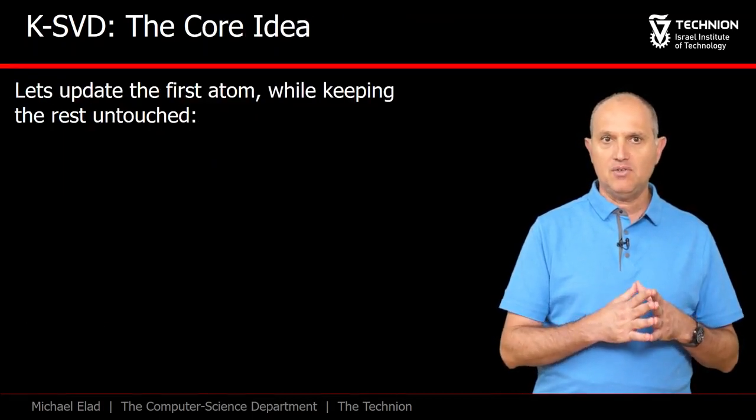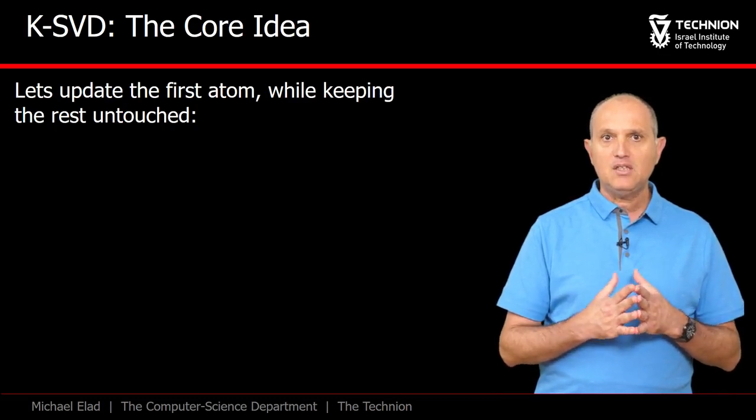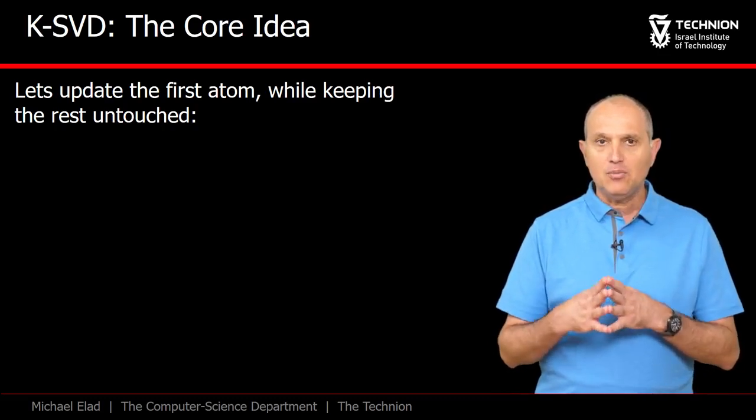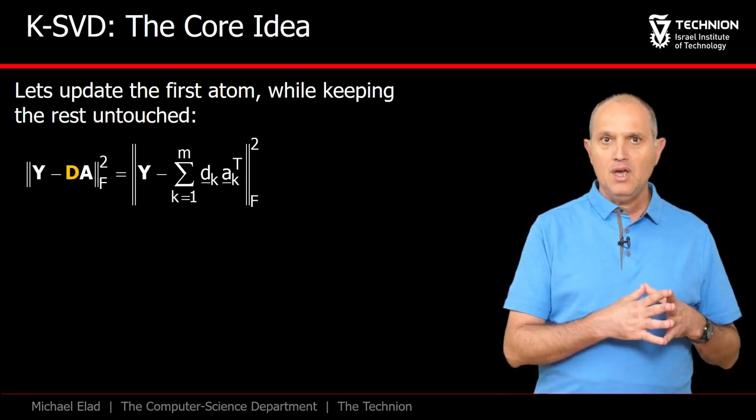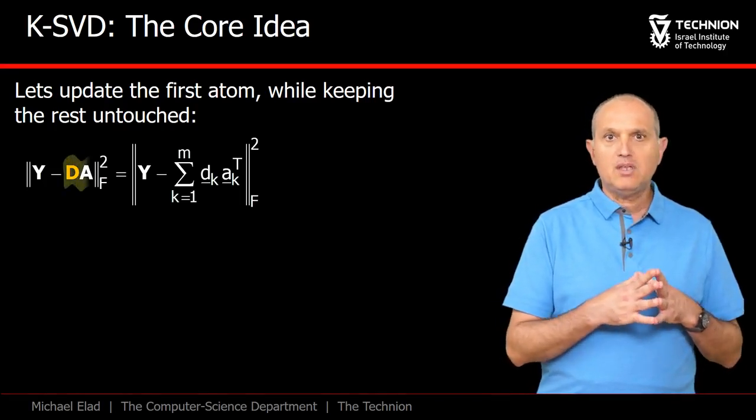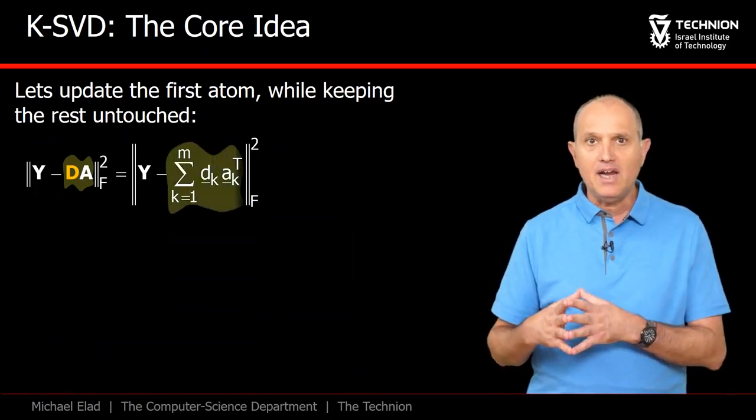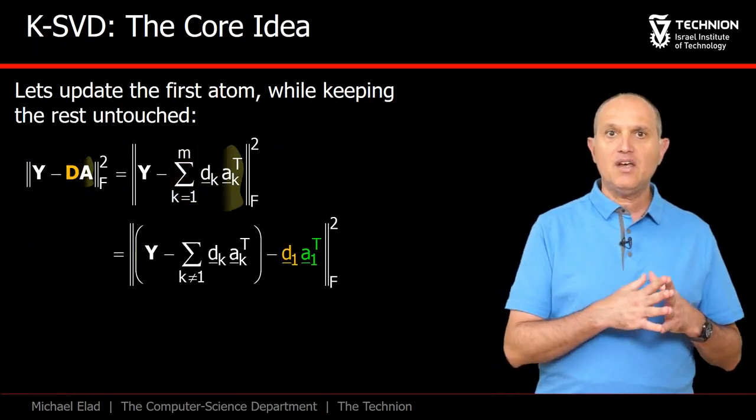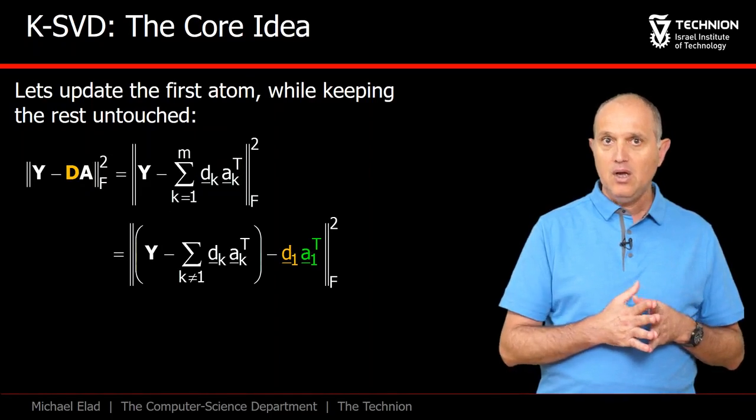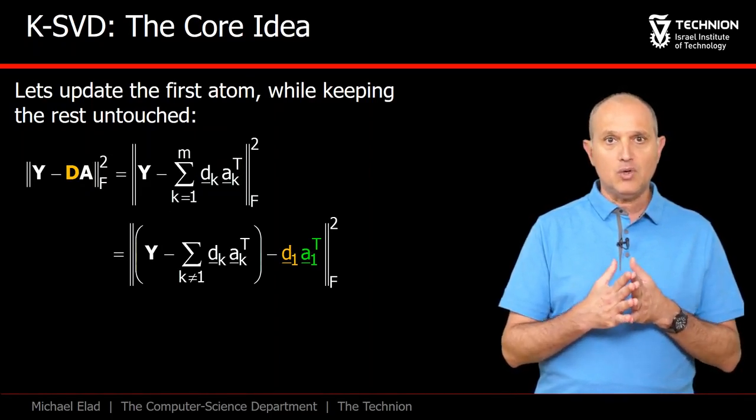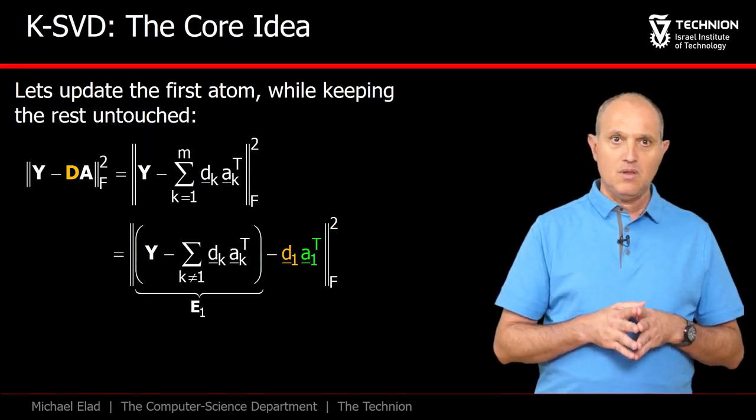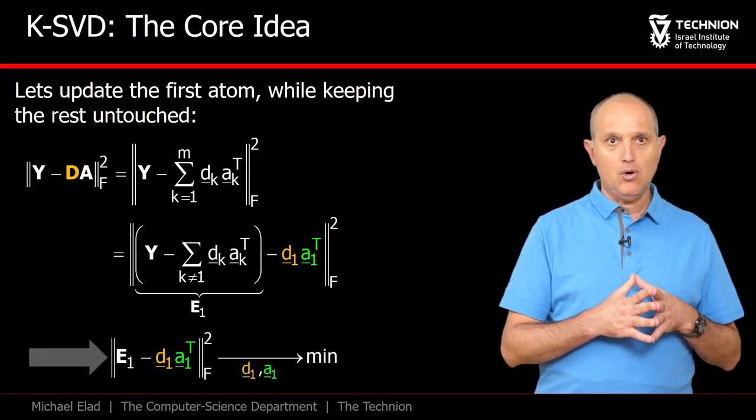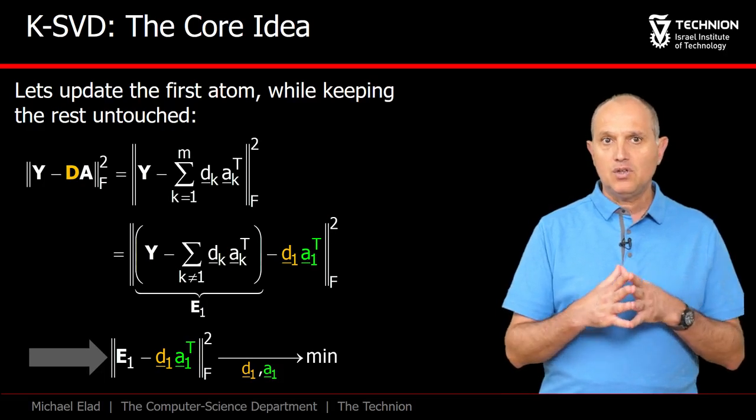Since the difference between the MOD and the KSVD resides on the dictionary update stage, let's focus on it. Assume for now that A is available and we are interested in updating the first atom D1. This expression describes our minimization goal, and all we did here was to break the multiplication D times A into M rank-1 elements, each being one atom multiplying its corresponding row in A. Assuming that all the other atoms are kept fixed along with their coefficients from A, we get this expression in which D1 and A1 transpose are both considered as unknowns. The expression denoted as E1 is a residual matrix of some sort that can be computed. Our goal is thus to bring this error to its minimum with respect to the two unknowns.